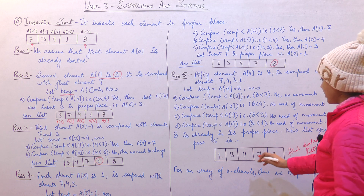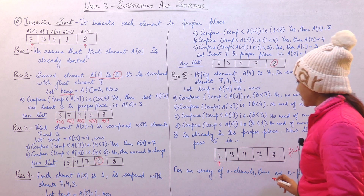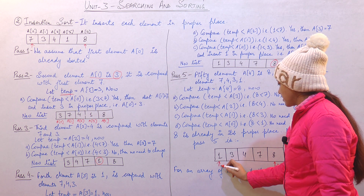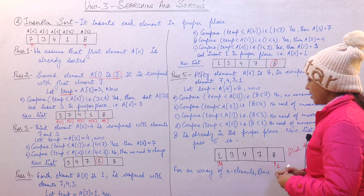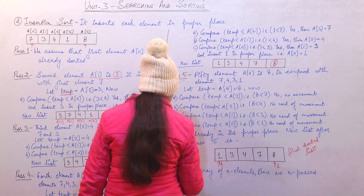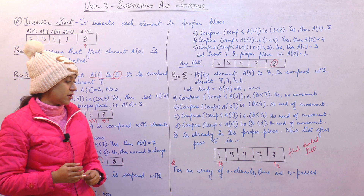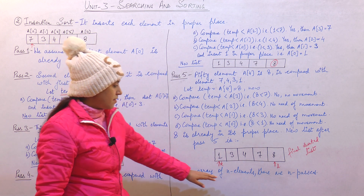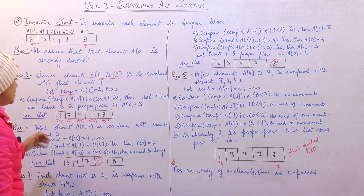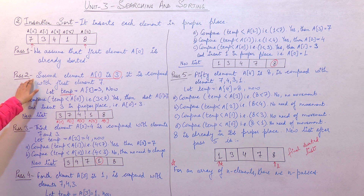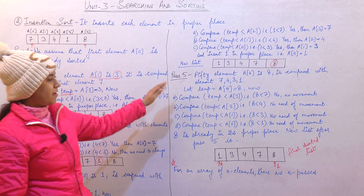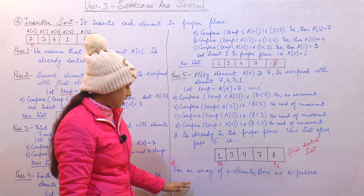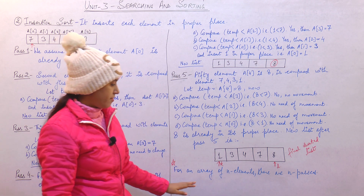This is the final sorted list, with the smallest element at first place and the largest element at the last place. An important point to remember: for an array of n elements, we will have n passes in insertion sort. In this example, we had 5 elements and 5 passes. Always keep this in mind.